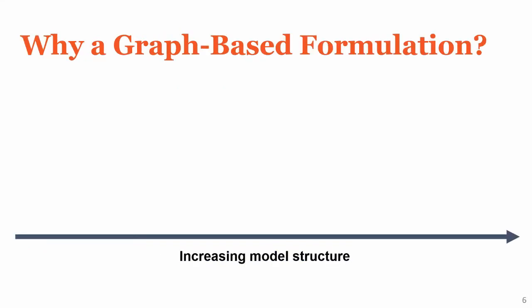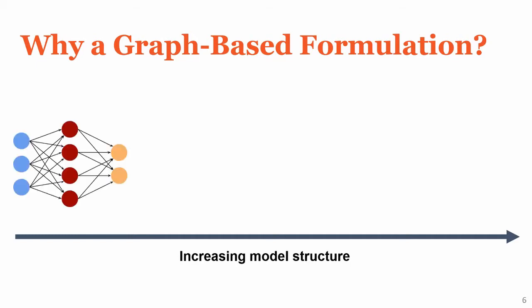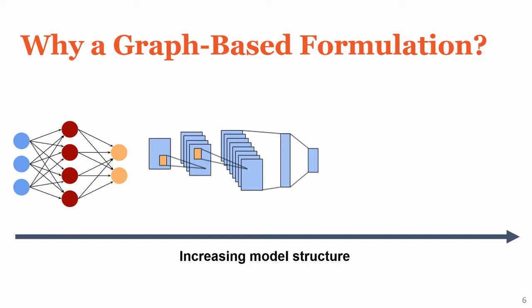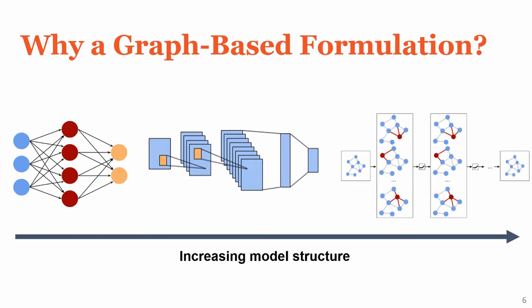Before we discuss the details of our graph formulation, I would like to motivate it from the perspective of structure in statistical models. One of the simplest statistical models with learnable parameters is known as a multi-layer perceptron, which considers a vector of features as the input. In theory, this model should be good enough for any prediction problem. However, when there's a clear structure to the data, we want to use a model that takes advantage of that structure. For example, convolutional neural networks, which are designed to work with image data specifically, have shown much higher performance than multi-layer perceptrons in image recognition tasks. The takeaway is that the more structure in the model, the better performance you'll tend to see. In our case, instead of image data, we have graph data, because the rail network fits very naturally into a graph-based formulation, and instead of a convolutional network, we'll be using a graph neural network.